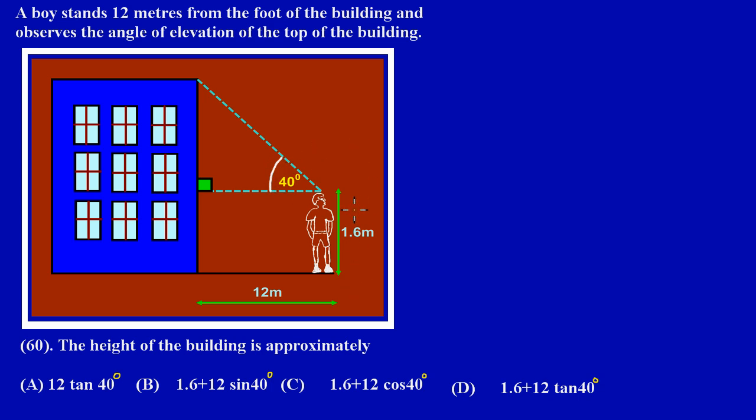The height of the boy is 1.6 meters and he's standing 12 meters away from the foot of the building. Now here in question 60 they have stated the height of the building is approximately, and they have given us some options. So obviously they need us to calculate that.